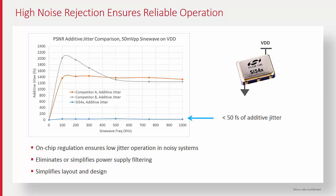We've heard many incidents from customers where they went with a part that was slightly cheaper and on paper it looked fine, only to find out after they got their boards back that their design didn't work at all because of the higher jitter due to this power supply noise. All of our oscillators and clock generators have extensive on-chip power supply filtering to make sure that the jitter stays very low in real-world conditions, which gives designers more margin and more peace of mind when using Silicon Labs for timing.